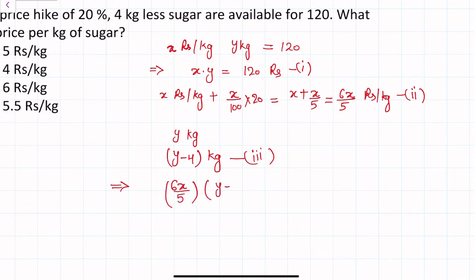6X upon 5 in bracket, in the other bracket y minus 4 which is equal to 120. So 6X multiplied by y minus 4 divided by 5.